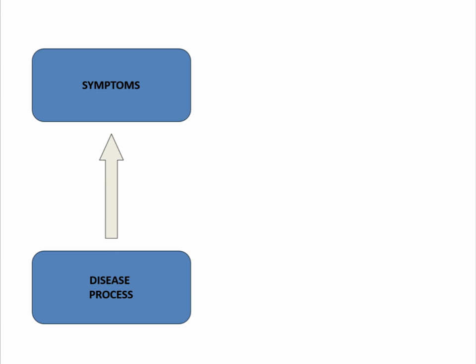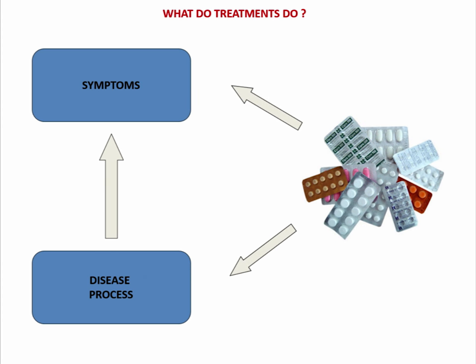If you have a disease and develop symptoms, a treatment may affect the symptoms, the disease process, or both. What we're clearly interested in is a treatment that actually stops the disease process happening rather than simply treating the symptoms. However, it's not always easy to tell the difference — you may give a treatment and see some kind of improvement but actually be simply treating the symptoms, not the disease.